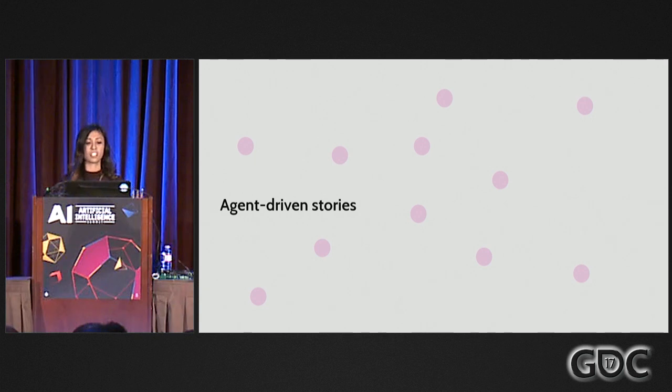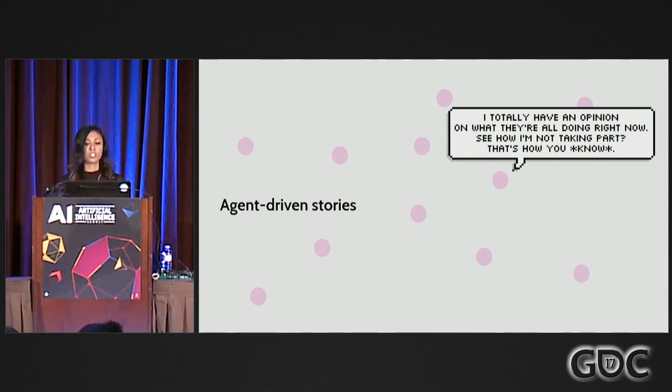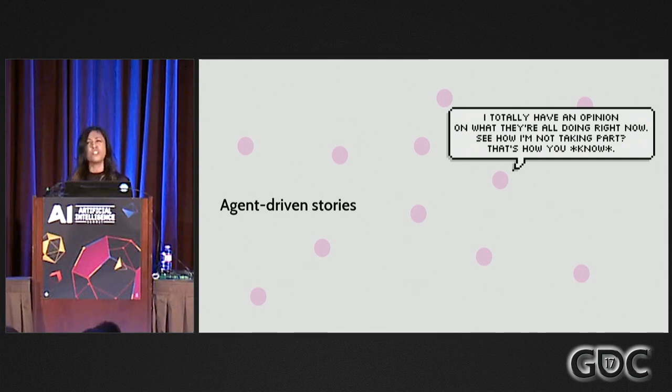Let's start with some definitions. What I'm calling agent-driven stories are those based around simulating the interactions of lots of agents, which can tell us something about that particular world through having the player interact with them. The way that stories are told is through a mechanism of noticing — noticing how agents are set up in opposition to each other, which ones are different, and why those properties matter in the context of that world.